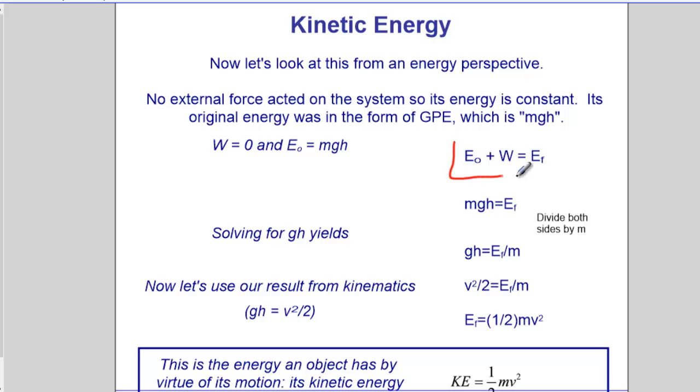Starting off with conservation of energy, the starting energy plus the work done is the final energy. So the starting energy is MGH. The final energy is some unknown energy that we're going to define.